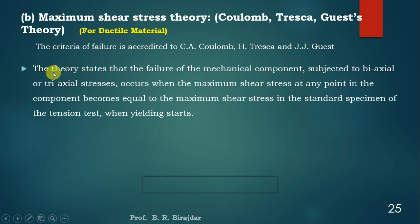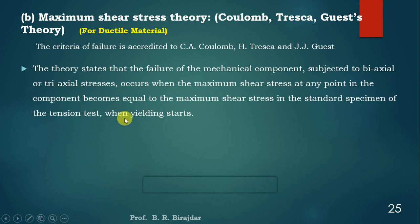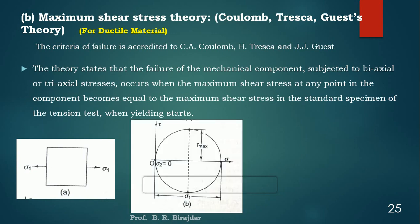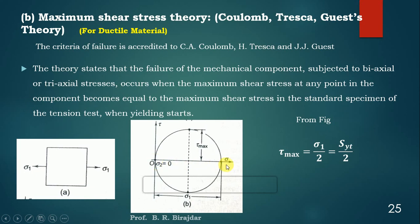What does this theory state? The theory states that the failure of a mechanical component subjected to biaxial or triaxial stress occurs when the maximum shear stress at any point in the component becomes equal to the maximum shear stress in the standard specimen of the tension test when yielding starts. If we plot the Mohr circle with sigma 1 as the maximum stress and sigma 2 = 0 in the y-direction, then tau max = sigma 1 / 2, because sigma 1 is the diameter of the circle and tau max is the radius. Therefore tau max = Syt / 2, which means tau max = 0.5 × Syt.